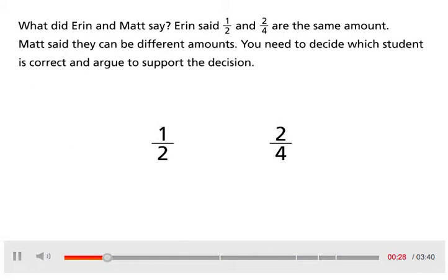What did Aaron and Matt say? Aaron said one-half and two-fourths are the same amount. Matt said they can be different amounts. You need to decide which student is correct and argue to support the decision.